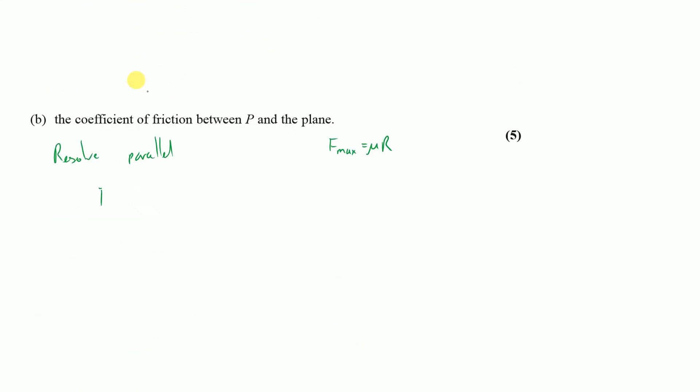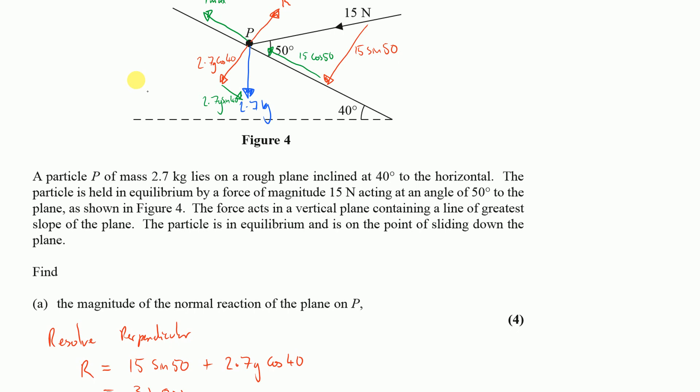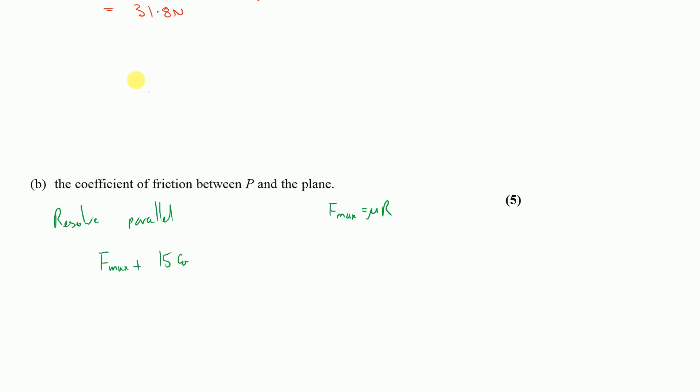So F max plus 15 cos 50 must be equal to 2.7 G sine 40. And I know F max is equal to mu multiplied by R, and that's going to be equal to 2.7 G sine 40 minus 15 cos 50.